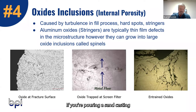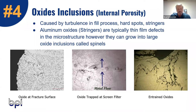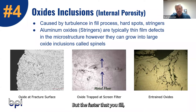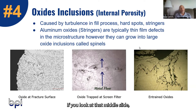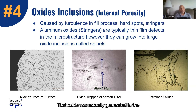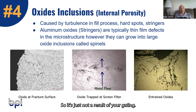If you're pouring in a sand casting and you're pouring too high, or your gating's not correct and you're filling too fast, you can get the oxide. So it can happen in anything, but the faster you fill, the more prone you're going to be to having them. If you look at that middle slide, you can see an oxide trap behind a filter. That oxide was actually generated in the furnace or the melting furnace, so it's just not a result of your gating.